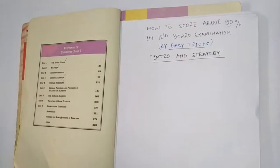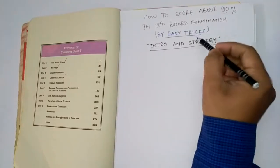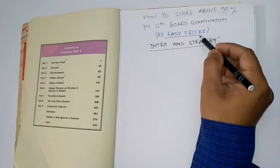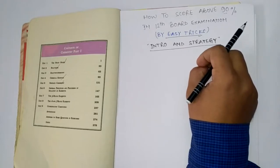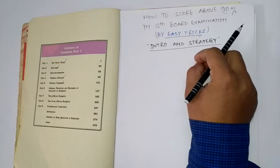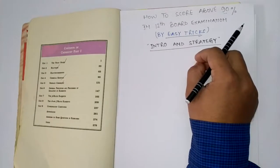We are going to start a series on how you can score above 90% in board exam. We are going to tell you the easy tricks — the hidden tricks in every chapter. This is a complete 30-day series where every day we are going to teach you around two or three chapters from each subject — not the complete chapter, only the easy tricks that are damn sure going to come in your board examination, based on questions regularly asked from the last 10 to 15 years.